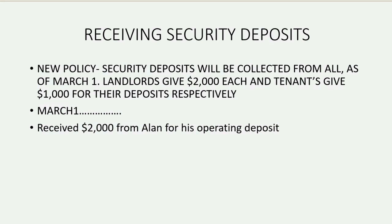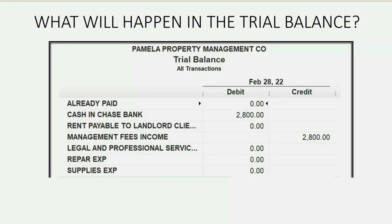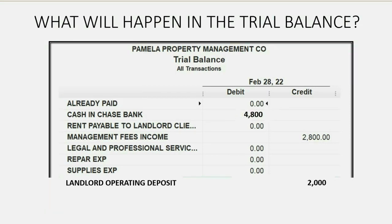On March 1 we receive $2,000 from Alan the landlord for his operating deposit, and that will be deposited into our operating account, not a special bank account. The landlord operating deposit will show up for the first time as a $2,000 credit balance liability owed back to Alan until it is applied or given back, and our bank account will increase to $4,800.